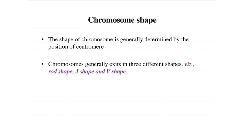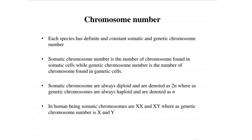The shape of a chromosome is generally determined by the position of the centromere. Chromosomes exist in three different shapes: rod shape, J shape, and V shape.